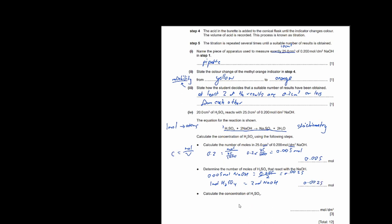Finally, calculate the concentration of H2SO4. Concentration = moles / volume = 0.0025 / (20/1000) = 0.125 mol/dm³.